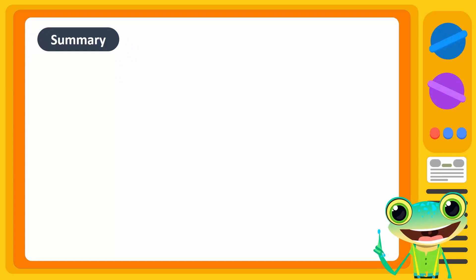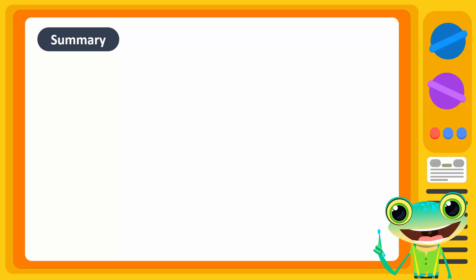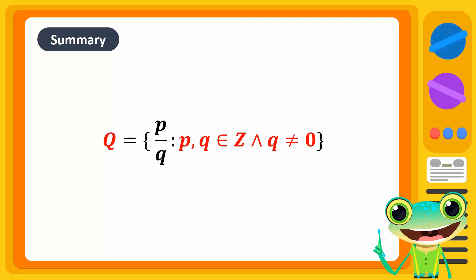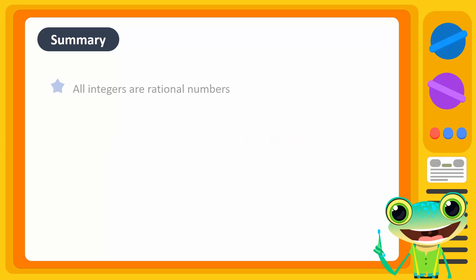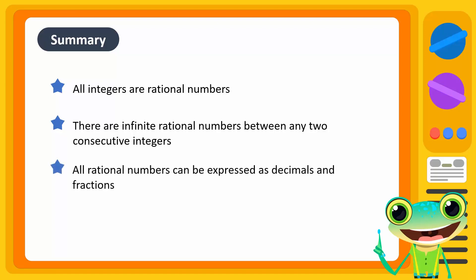In summary, numbers that can be expressed in the form P/Q where P and Q are integers and Q is not 0 are called rational numbers. The set of rational numbers is denoted by the capital letter Q and is written in set builder notation. All integers are rational numbers and there are infinite rational numbers between any two consecutive integers. All rational numbers can be expressed as decimals and fractions, but not all fractions are rational numbers.